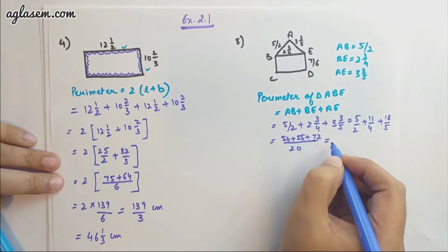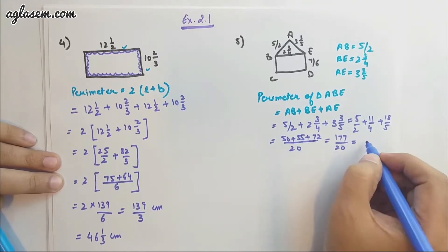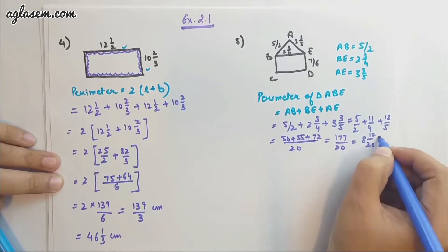That makes 177/20. Or if you wish to convert into a mixed fraction, it will be 8 17/20 centimeter.